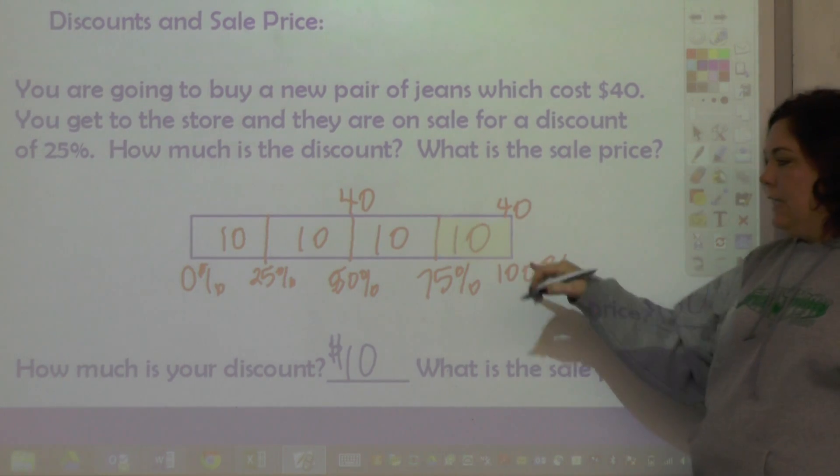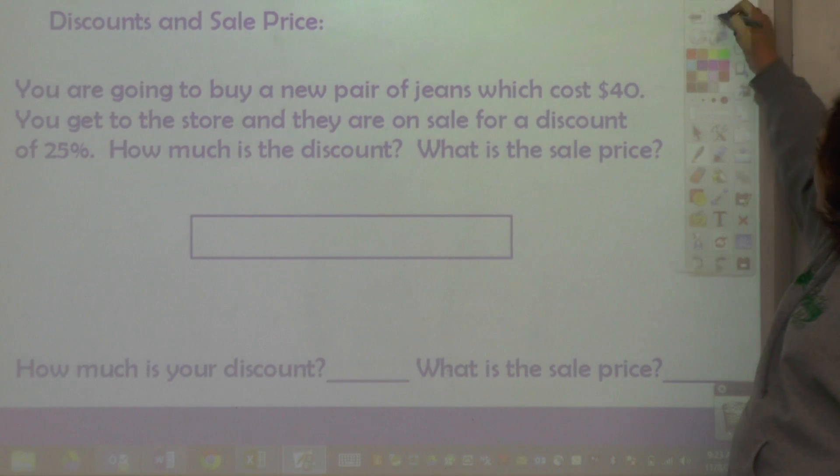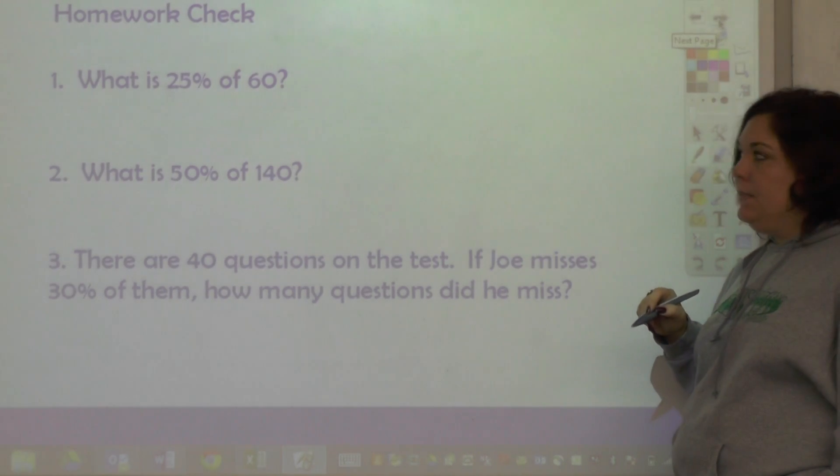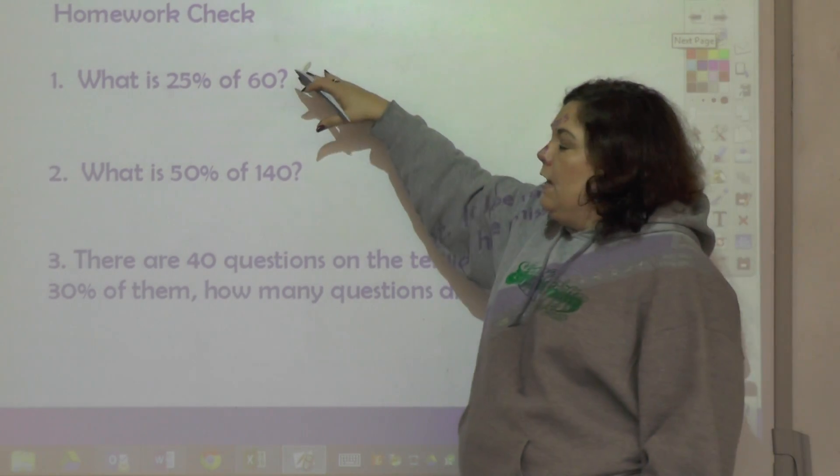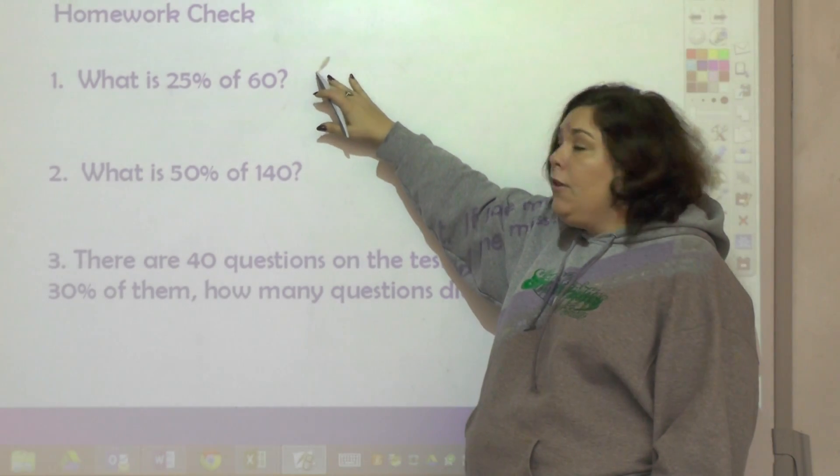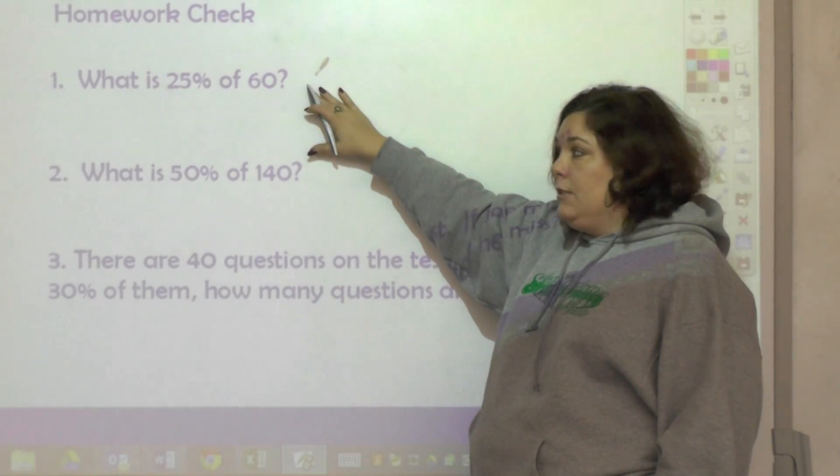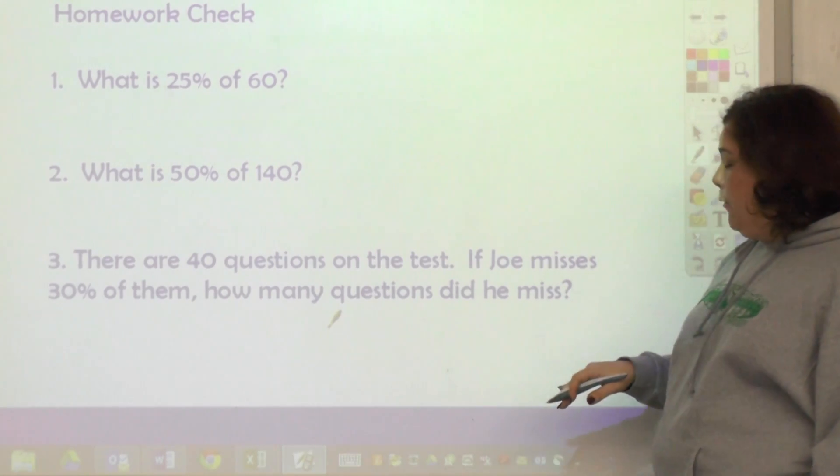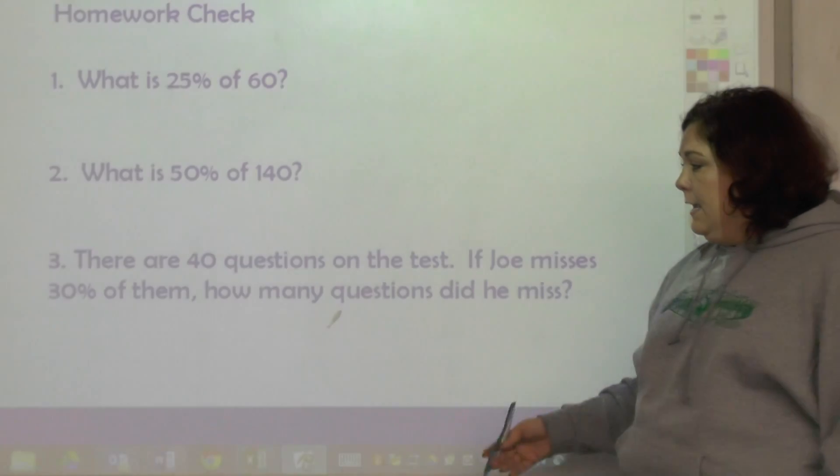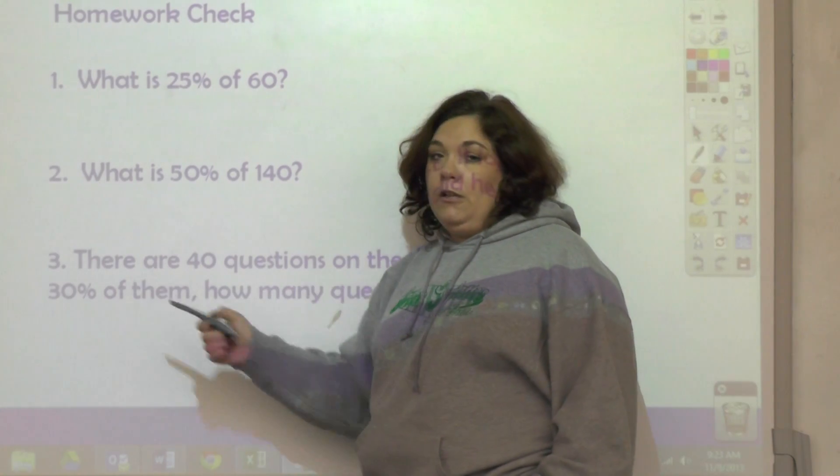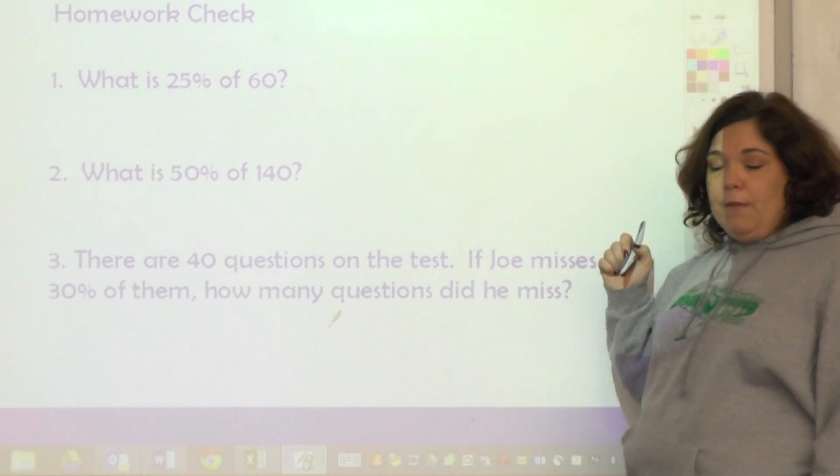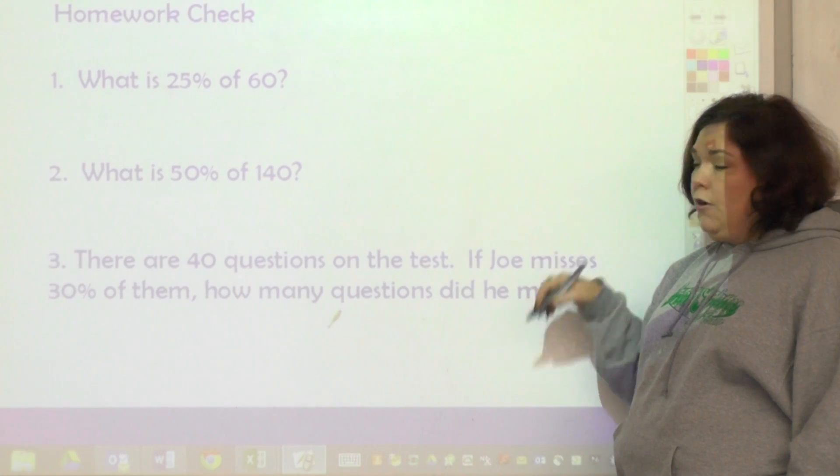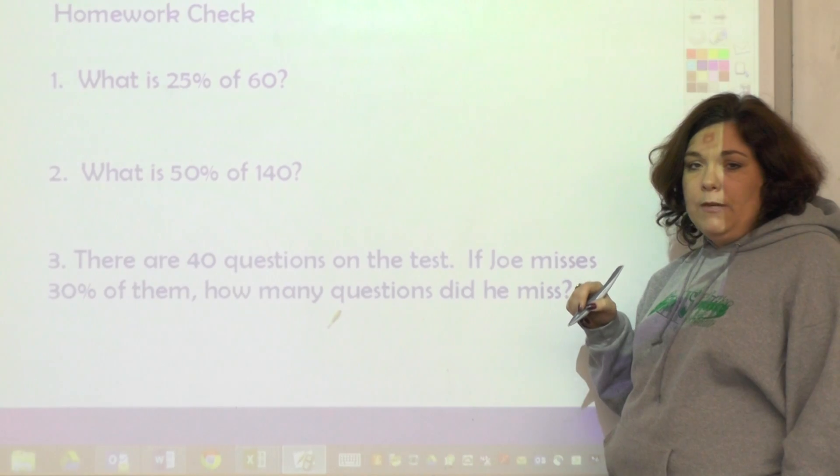So here's your homework check - it's just three problems. And I want you to draw a bar model and label it and figure out the answer for one, for two, and for three. And for three, it's a word problem and it's 30%, so you're going to look at taking 10% off the bar model three times. So do your homework check, turn in your answers, and we'll go over it tomorrow.